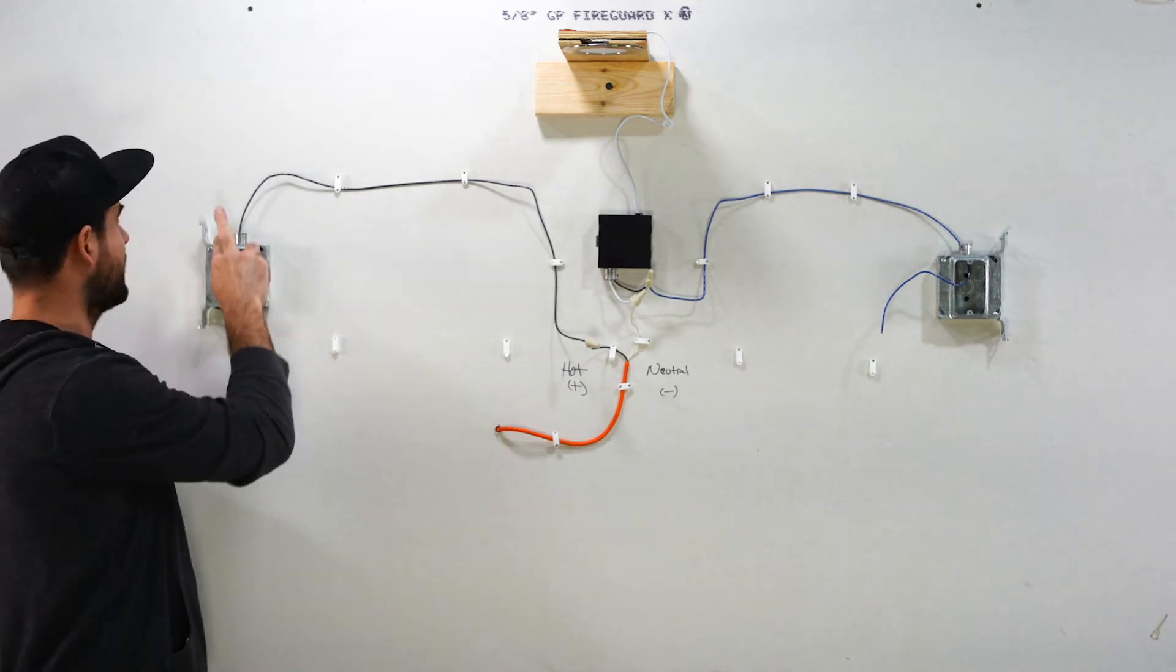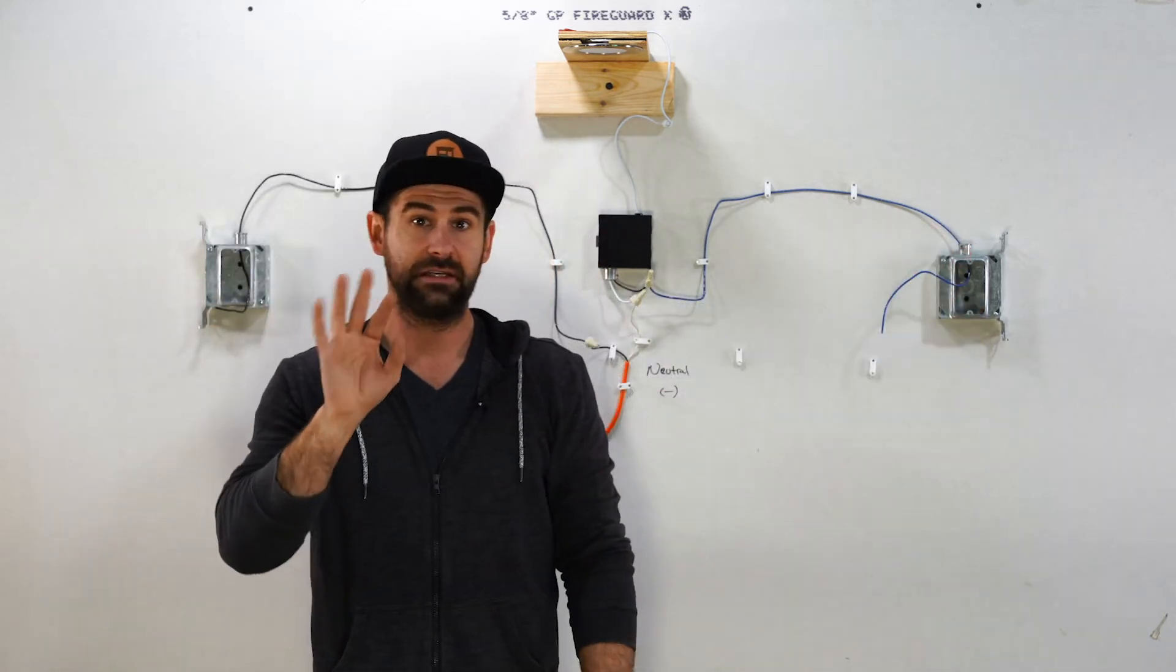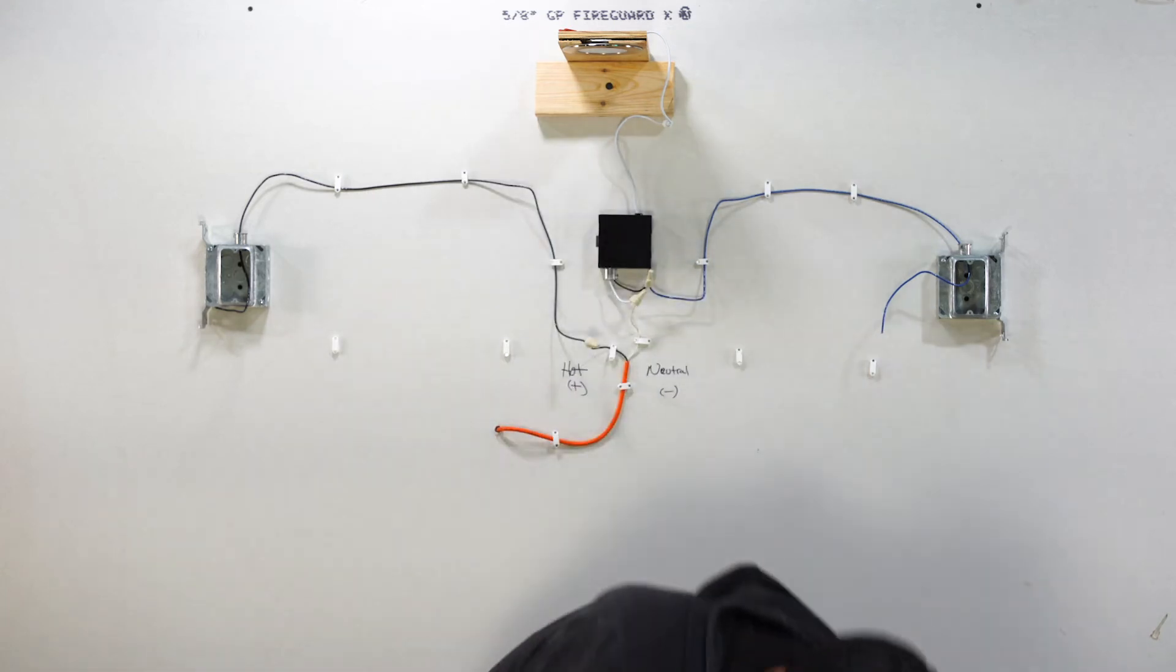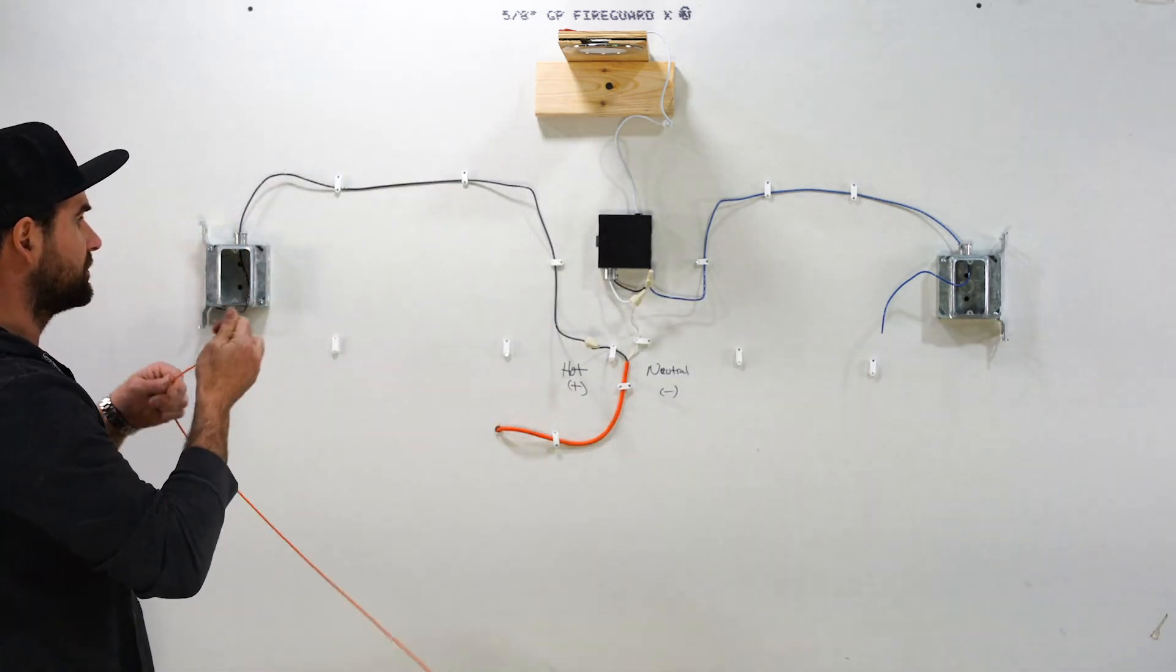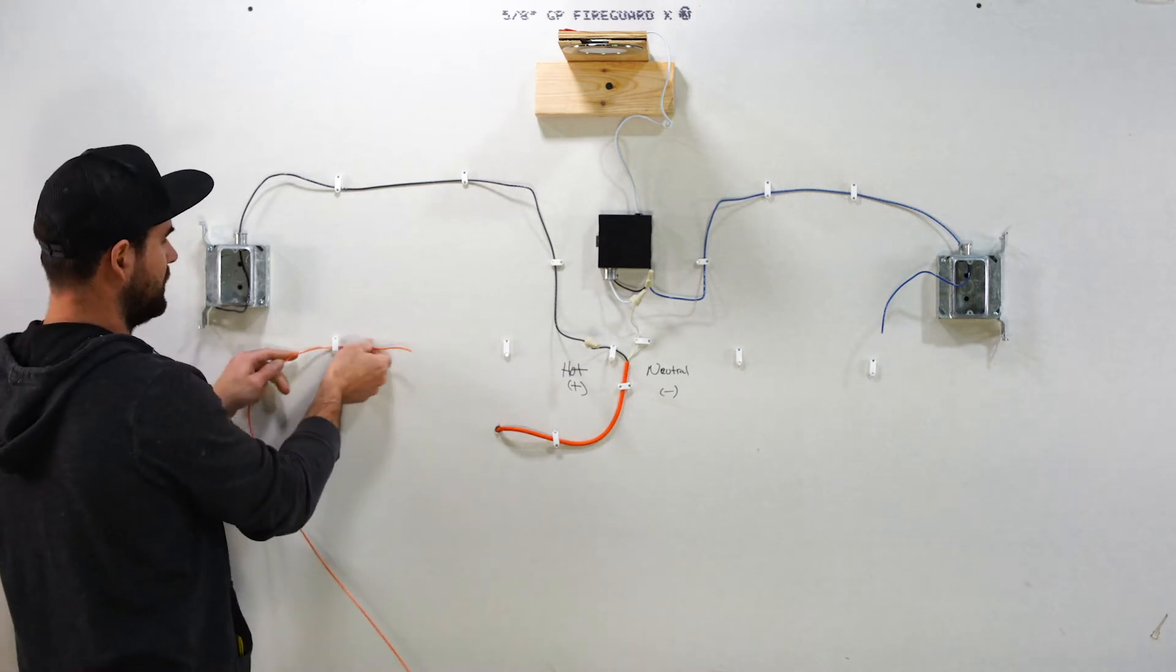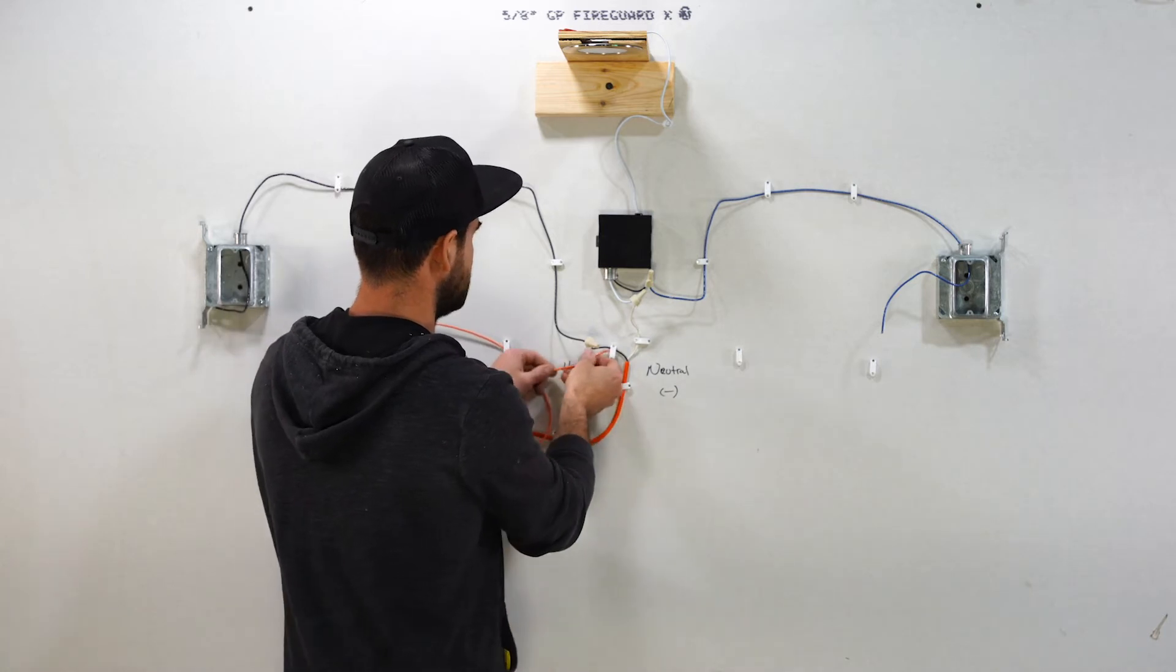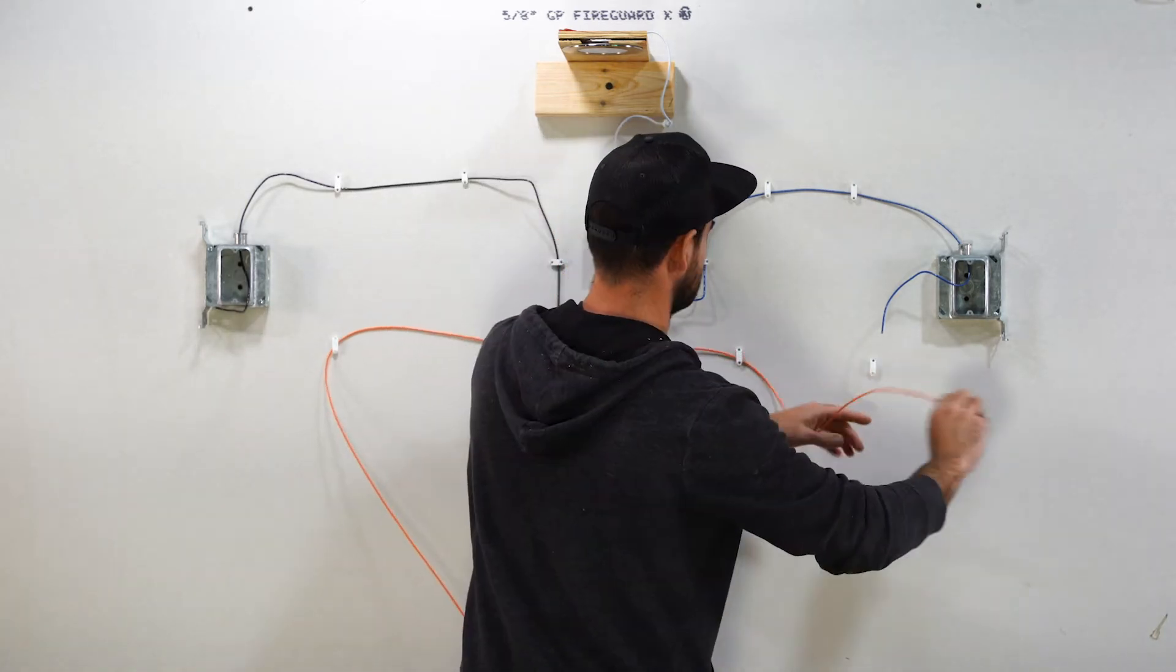So the next step is we have to get two wires from this box over to this box and those need to be the same color and that's the easiest way to identify and keep things the same. So in this case we're going to keep with the Chicago theme here, we're going to go Chicago Bears so we're going to do an orange wire. So we got blue and orange and then we're going to run two wires and these are going to run from switch to switch.